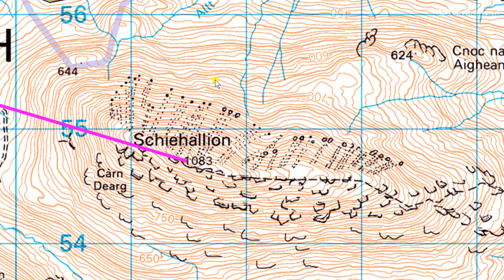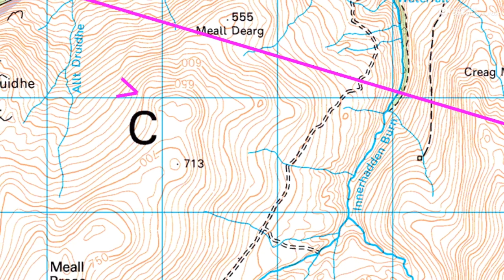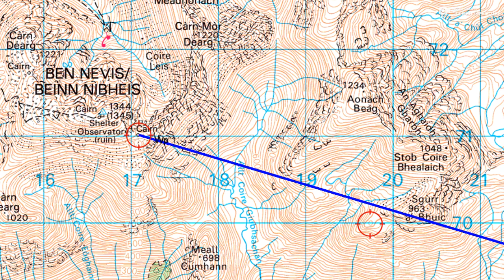So that was the answer to the task. We were looking along that line to Sgurr a' Bhuic, and the little ring contour was the feature we were looking for. A bit of a tricky one — won't compare to last week's — but certainly worth looking at. Hope you got it right, hope you enjoyed it, hope you learned something. Thanks for watching, look out for more navigation challenges. Bye for now.